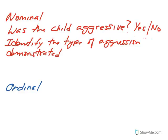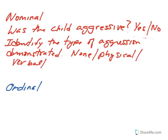Another way to obtain data at the nominal level is to identify the type of aggression demonstrated. We could state that there was none — no aggression — or we could say physical, verbal, or both physical and verbal. The children will be categorized based on the type of aggression demonstrated. Here we're defining what aggression is, and then we're able to measure it for each individual exposed to the different levels of the independent variable.